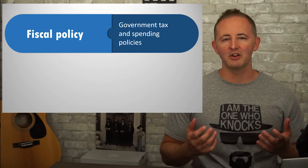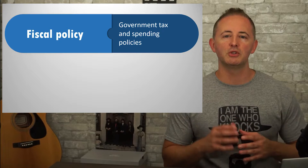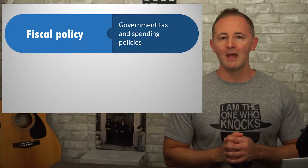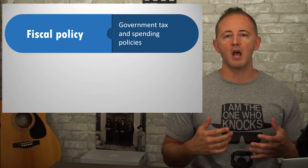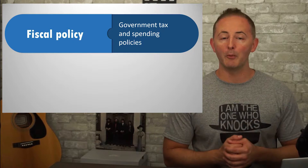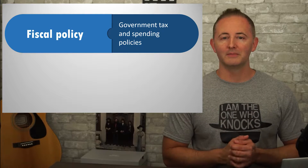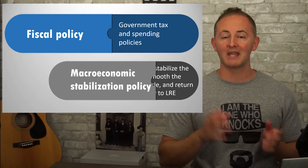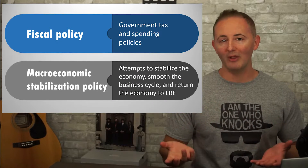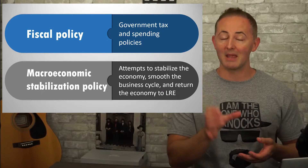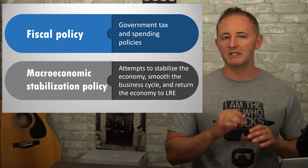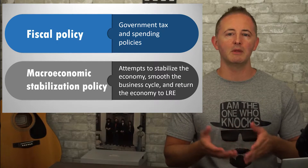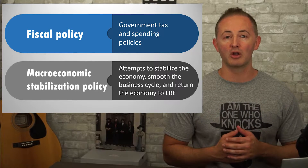What we're focusing on here is that fiscal policy can be used to achieve specific macroeconomic goals, like bringing the economy to the full employment level of output, for example. This can sometimes be referred to as macroeconomic stabilization policy, the goal of which is to stabilize the economy by basically smoothing out the business cycle and bringing the economy back to long-run equilibrium.